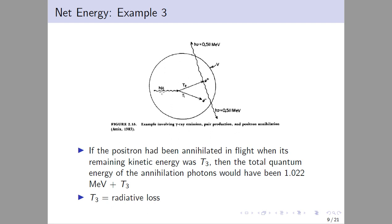Again, a photon enters this volume. If the positron is annihilated in flight when its remaining kinetic energy is T3, the total quantum energy of the annihilation photons would be 1.022 MeV plus T3.